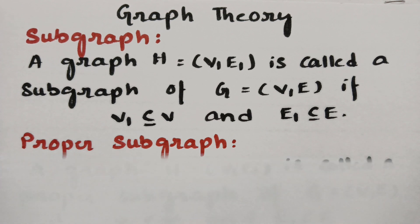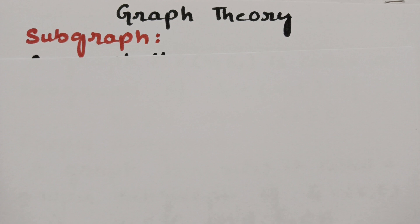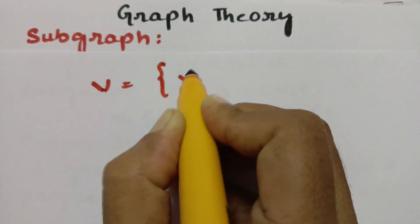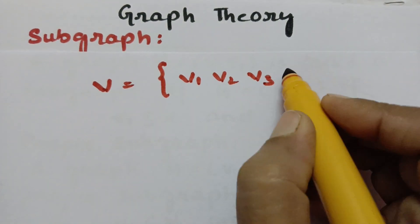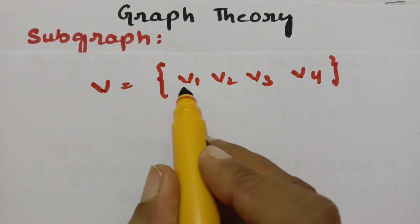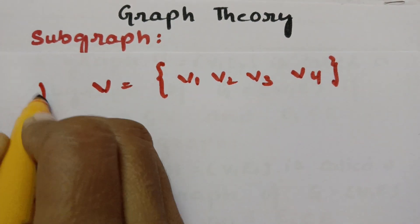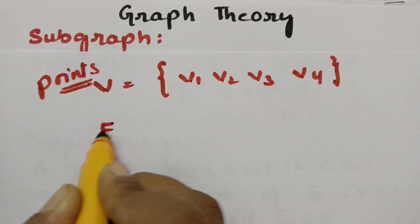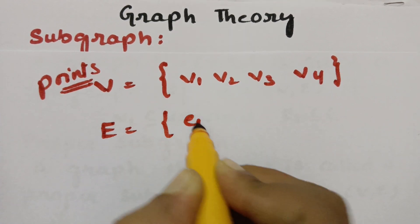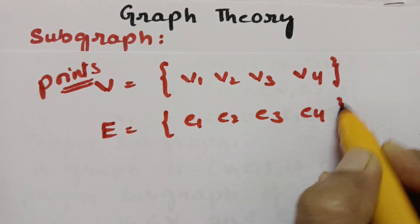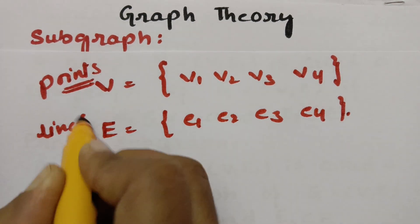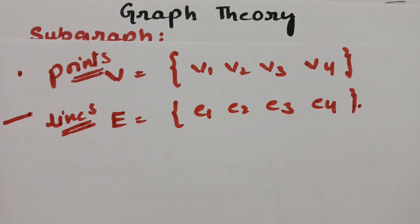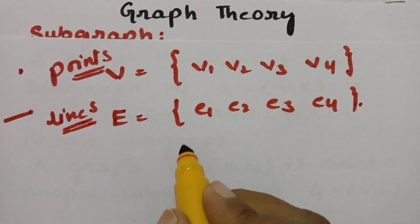Let me explain what a graph is and how it is formed. V is the set of all vertices — for example, V1, V2, V3, and V4 — and these are nothing but points or nodes. Edges are nothing but lines. So when these points and lines add up together, it becomes a graph.